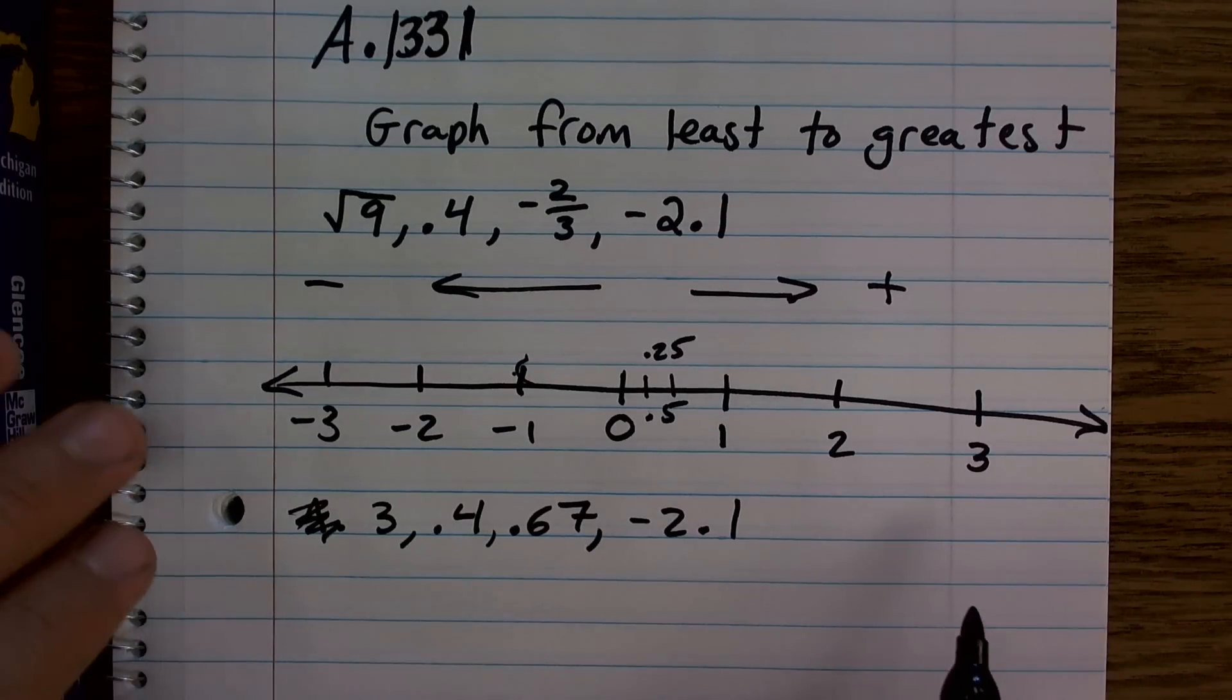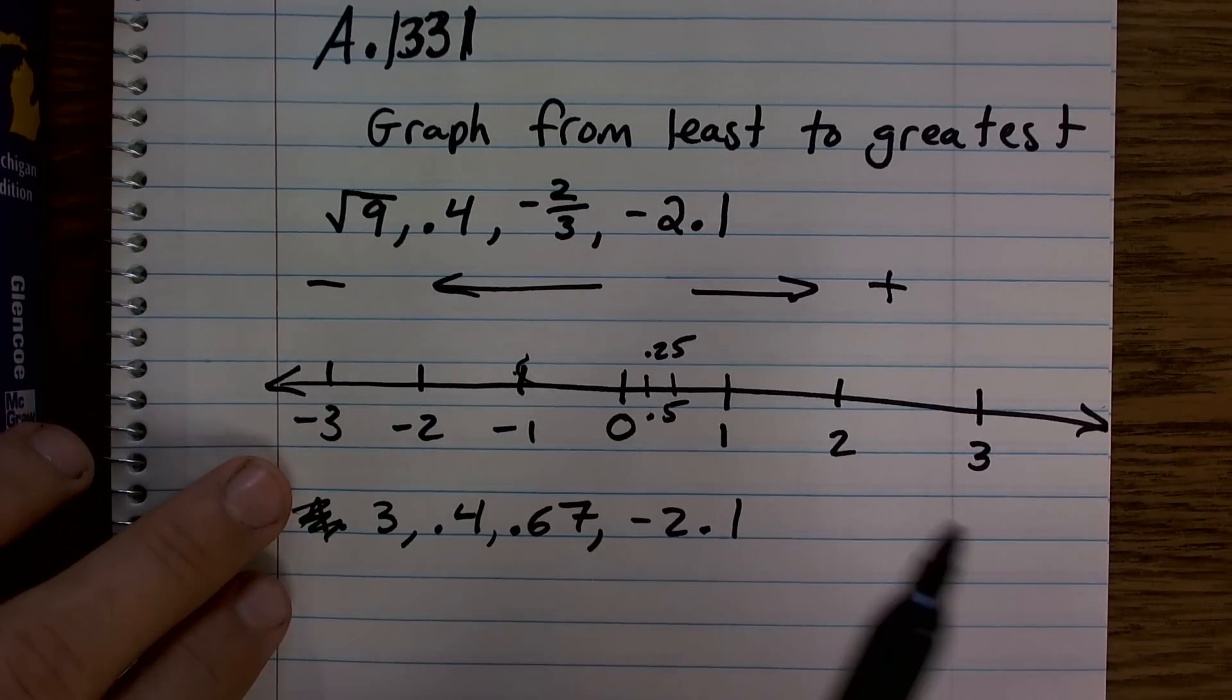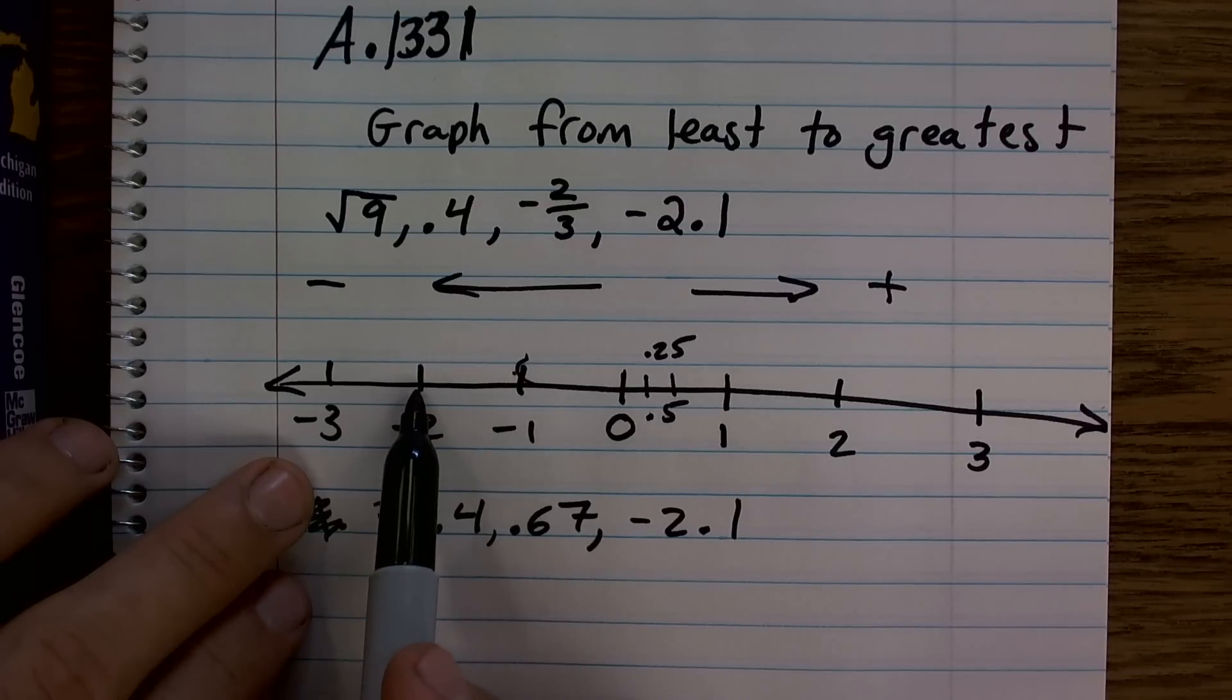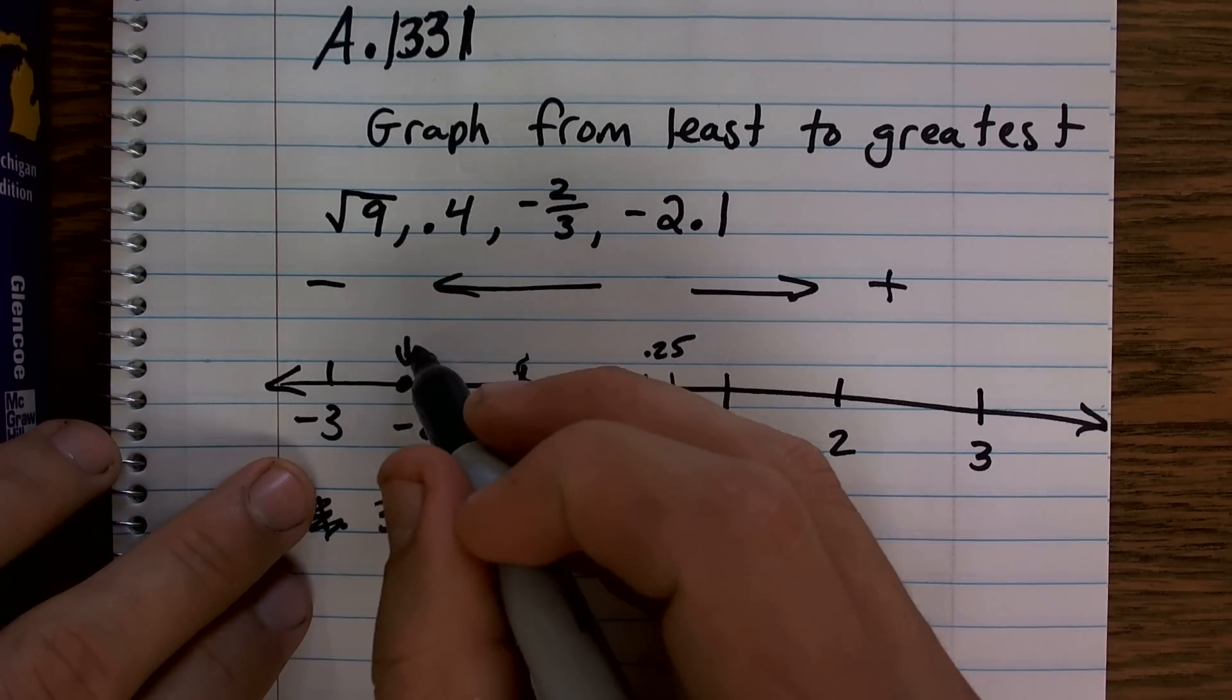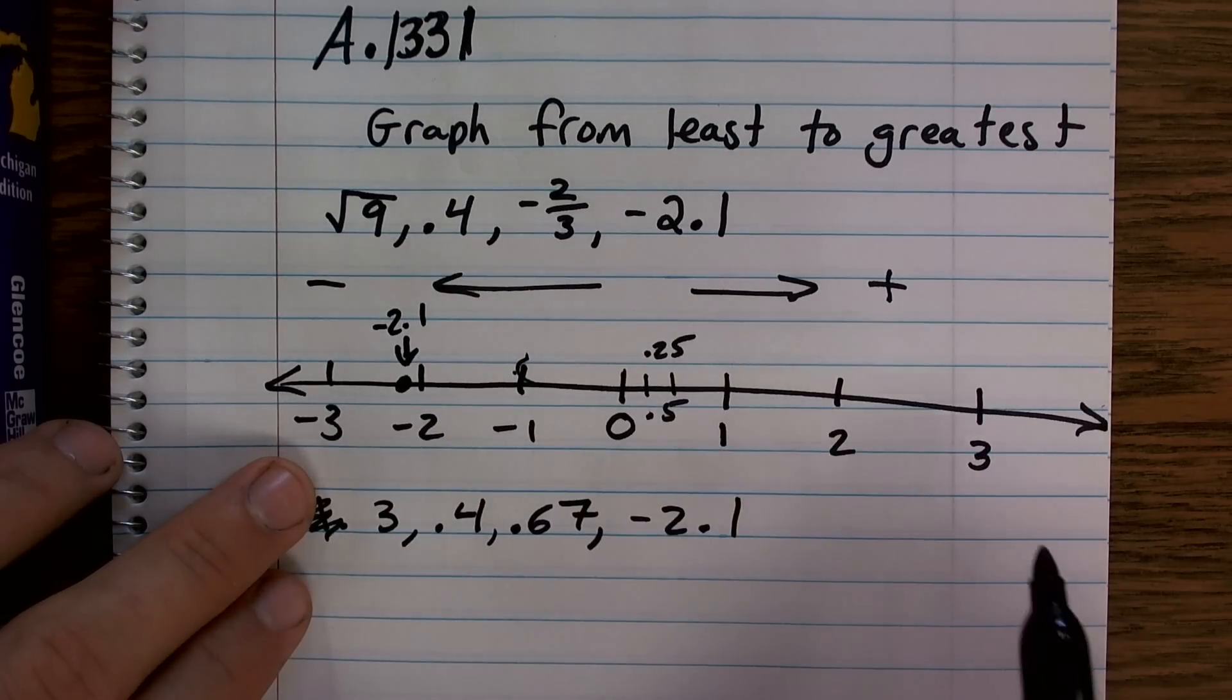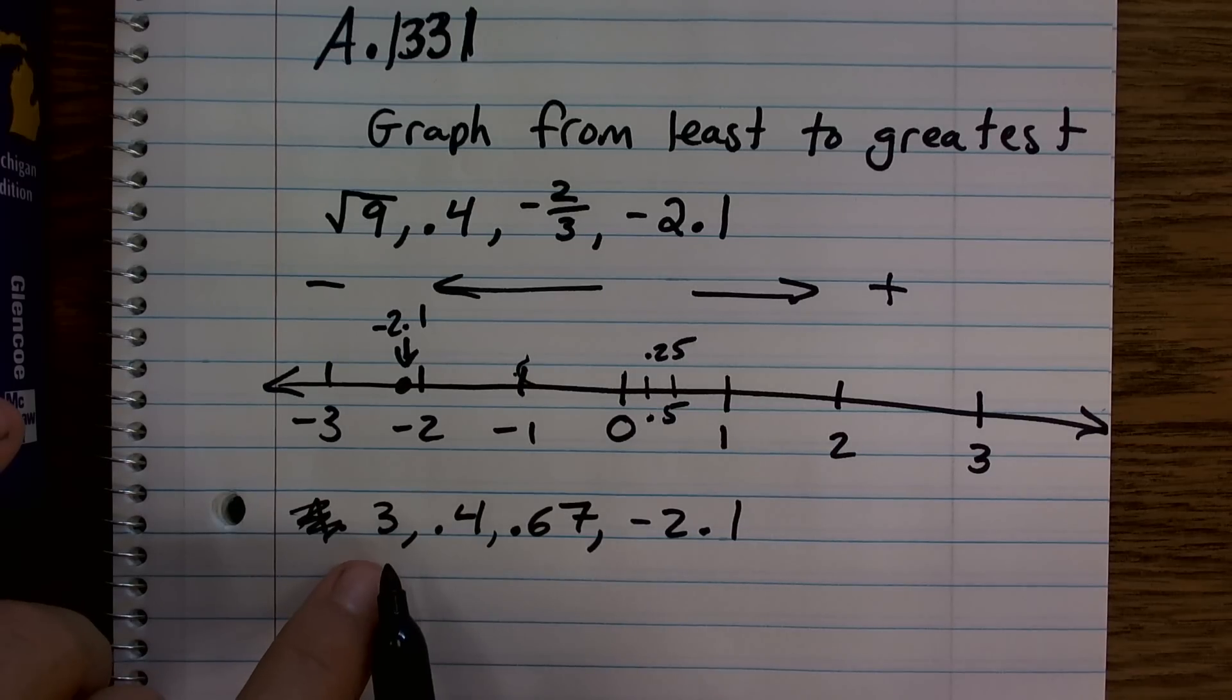So what I'm going to do is, I'm just going to look at, and remember we want to order these from least to greatest. So negative 2.1 would be negative 2 is here, and then 0.1 would be 1 tenth over to the left. Then, the next one is, I say, do I have any other negative numbers? And the answer is, no, I do not.